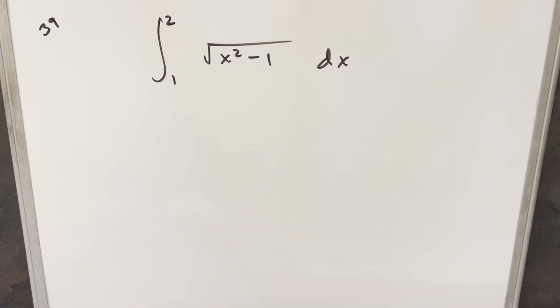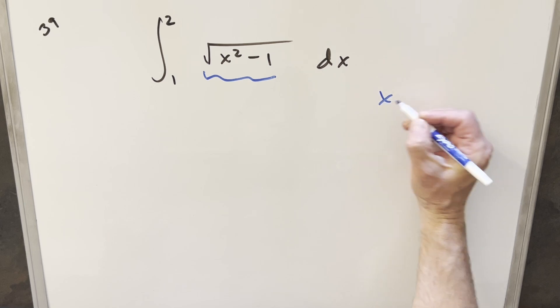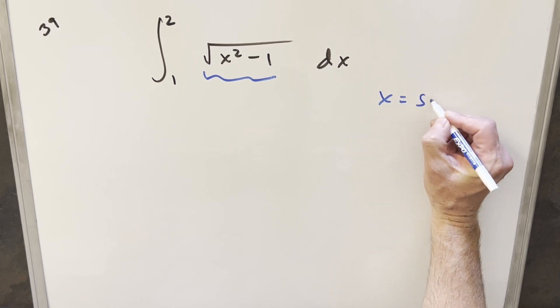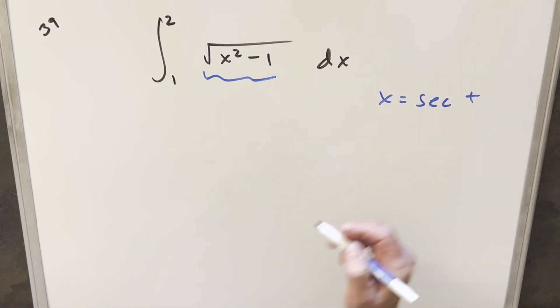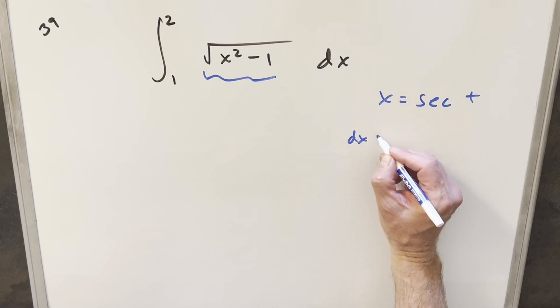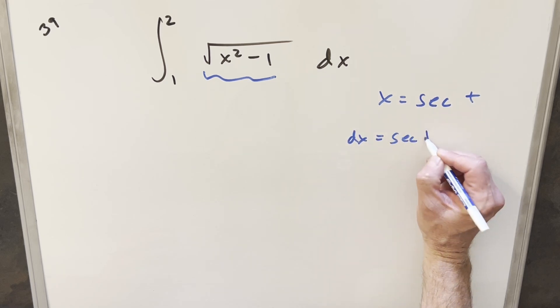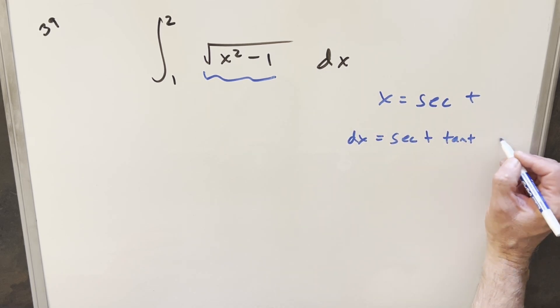Okay, to get started with this, I'm just going to do the most straightforward thing and do a trig substitution on this. What we'll do, I'm going to substitute for x and we'll call x equal to secant of t. Take a derivative. Our dx value is going to be secant t tan t dt.